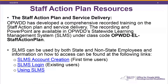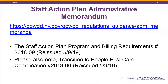Today's presentation is based on the requirements for the Staff Action Plan outlined in the Staff Action Plan Program and Billing Requirements ADM. This ADM, as well as the Transition to People First Care Coordination ADM, were both reissued on May 9th. You can find both documents at the link on this slide. We will be reviewing in further detail what was reissued at our June 5th conference. The changes are underlined in the ADMs to show what is different from the document issued prior to May 9th.